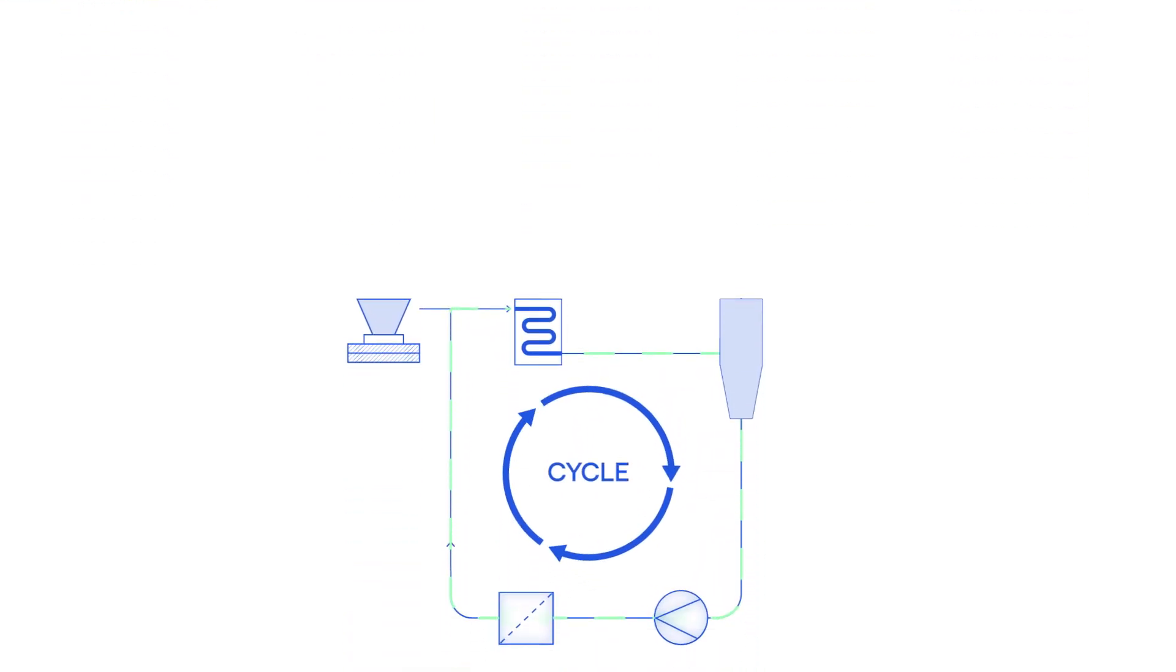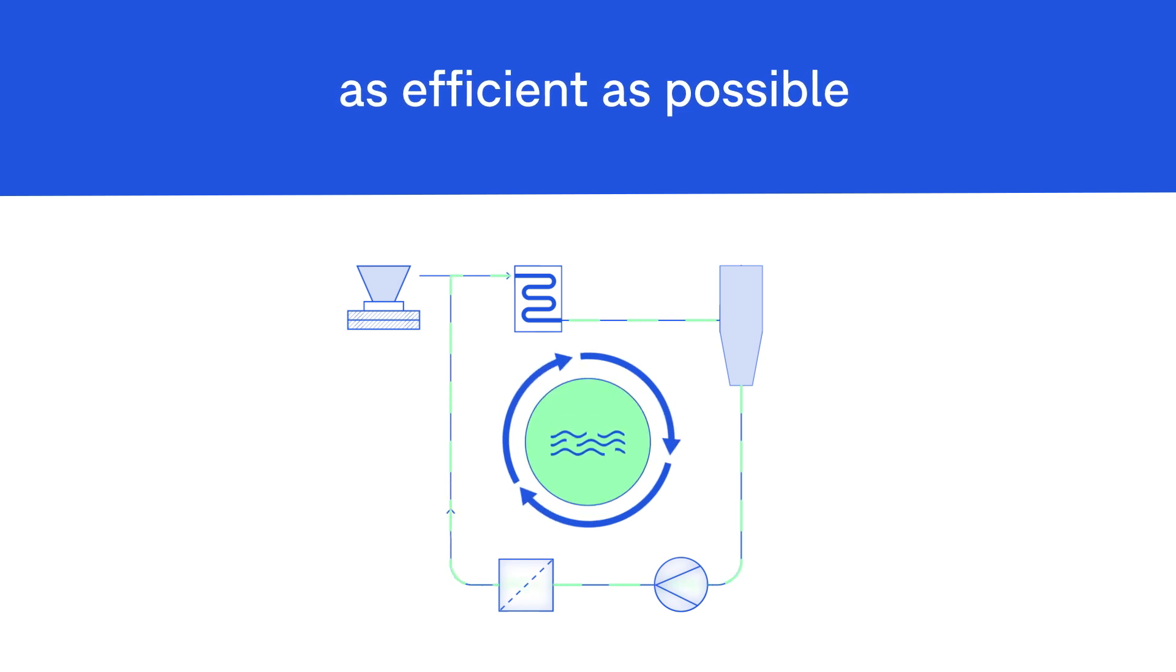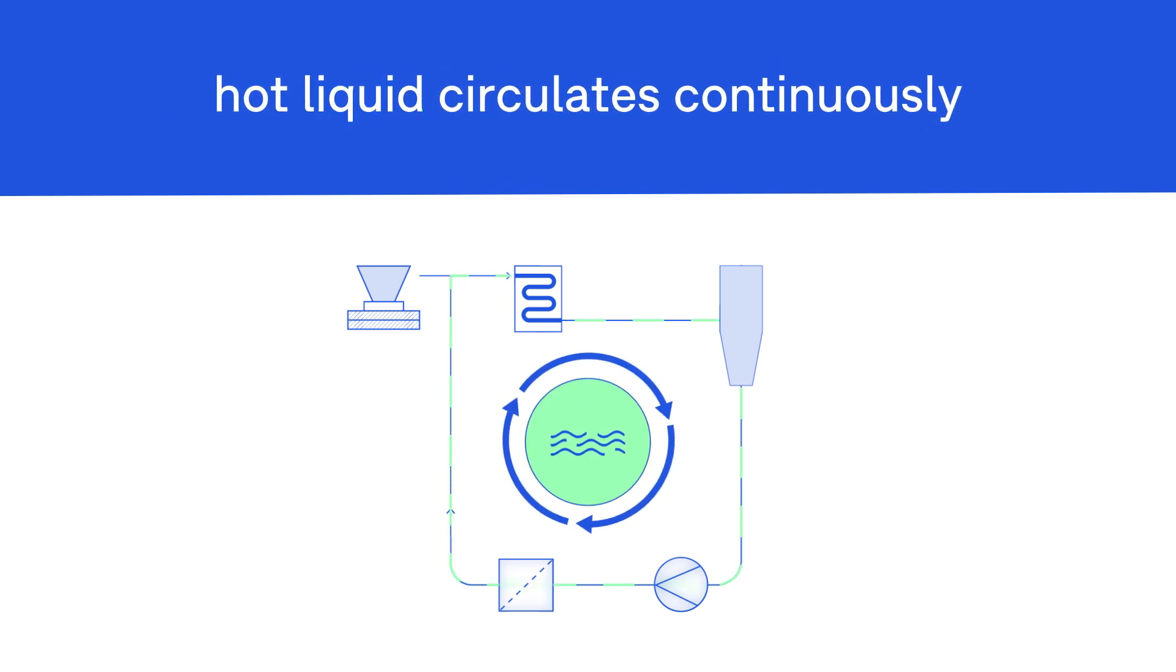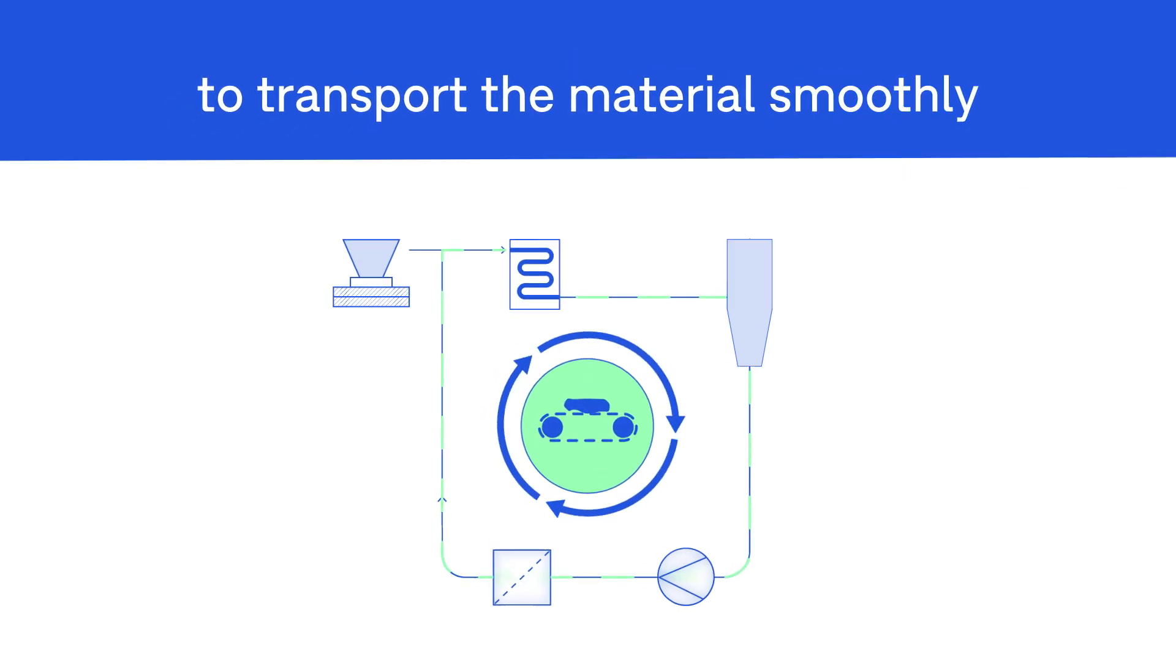To make the whole process as efficient as possible, we mix the end-of-life plastic with a hot liquid that circulates continuously. This saves energy, supports heat transfer, and helps to move the material smoothly through the entire system.